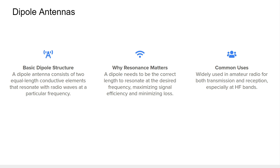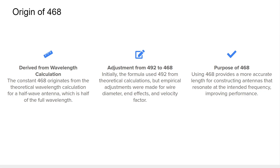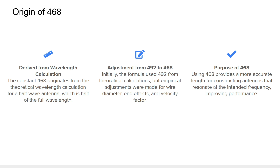The number 468 isn't arbitrary or random. It's derived from a theoretical wavelength calculation, specifically for a half-wave antenna. Initially, the number 492 was used in early calculations based on ideal conditions. However, real-world effects such as end effects, wire thickness, and velocity factor — where waves travel slightly slower in wire than in free space — required refinement. Through empirical adjustments, 468 became the standard. This ensures that the antenna length will resonate correctly at the desired frequency, optimizing signal performance.